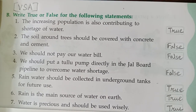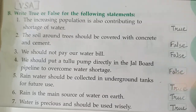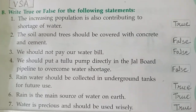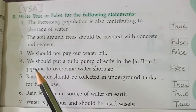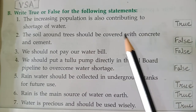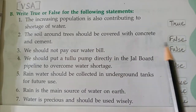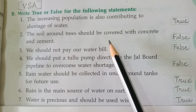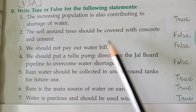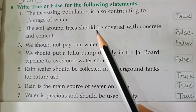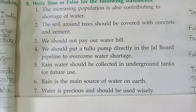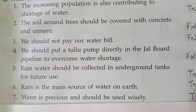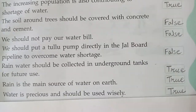Now some very short answers — true or false. 'The increasing population is also contributing to shortage of water.' True. 'The soil around a tree should be covered with concrete and cement.' False, because then water cannot seep through the soil and groundwater will deplete. 'We should not pay our water bills.' This is also false.